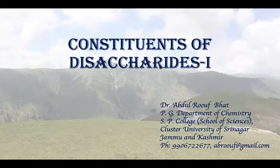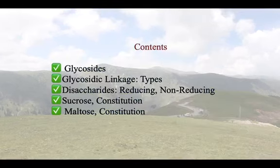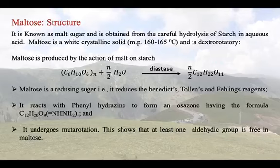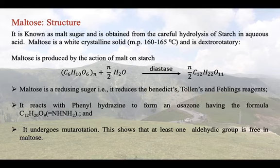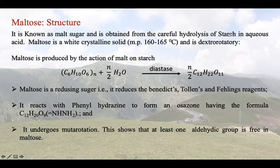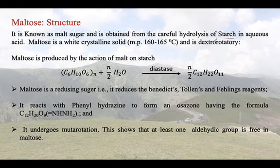A warm welcome to all my students. Today we are taking the disaccharide part, so let us start with the structure of maltose. Maltose is known as malt sugar and is obtained from the careful hydrolysis of starch in aqueous acidic conditions. Starch is a polysaccharide and from that polysaccharide we are getting maltose. Maltose is a white crystalline solid and is dextrorotatory.